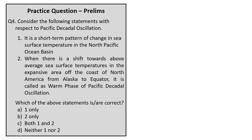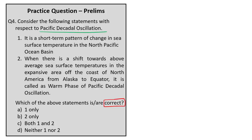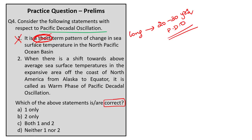Question 4 presents two statements on the Pacific Decadal Oscillation. Statement 1 says it is a short-term pattern of change in sea surface temperature in the North Pacific Ocean basin — this is incorrect because it is a long-term pattern lasting 20 to 30 years, which is why it is called 'decadal'. Statement 2 says when there is a shift towards above-average sea surface temperature in the expansive area of the coast of North America from Alaska to the equator, it is called the warm phase of the Pacific Decadal Oscillation — this statement is correct. Therefore, the answer is option B, statement 2 only.